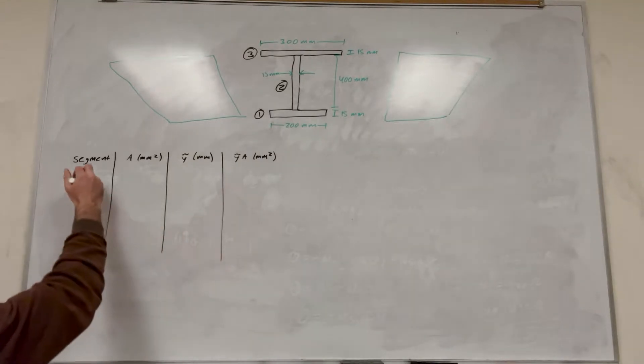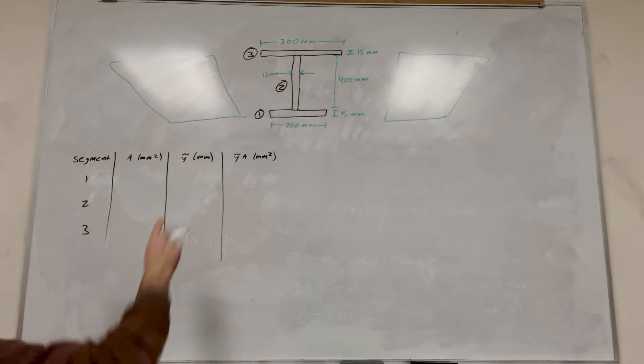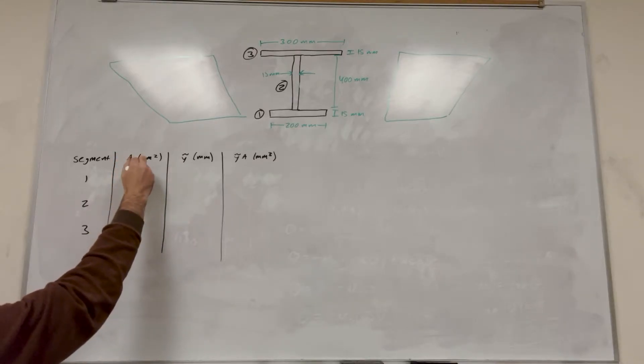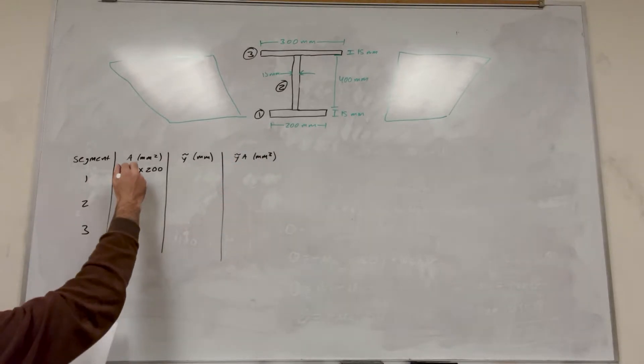So let's start. We have segment one, segment two, and segment three. So segment one, it's area, right? It's area is going to be 15 times 200. So because it's 15 tall, 200 wide, pretty simple. So it's area is 3,000.